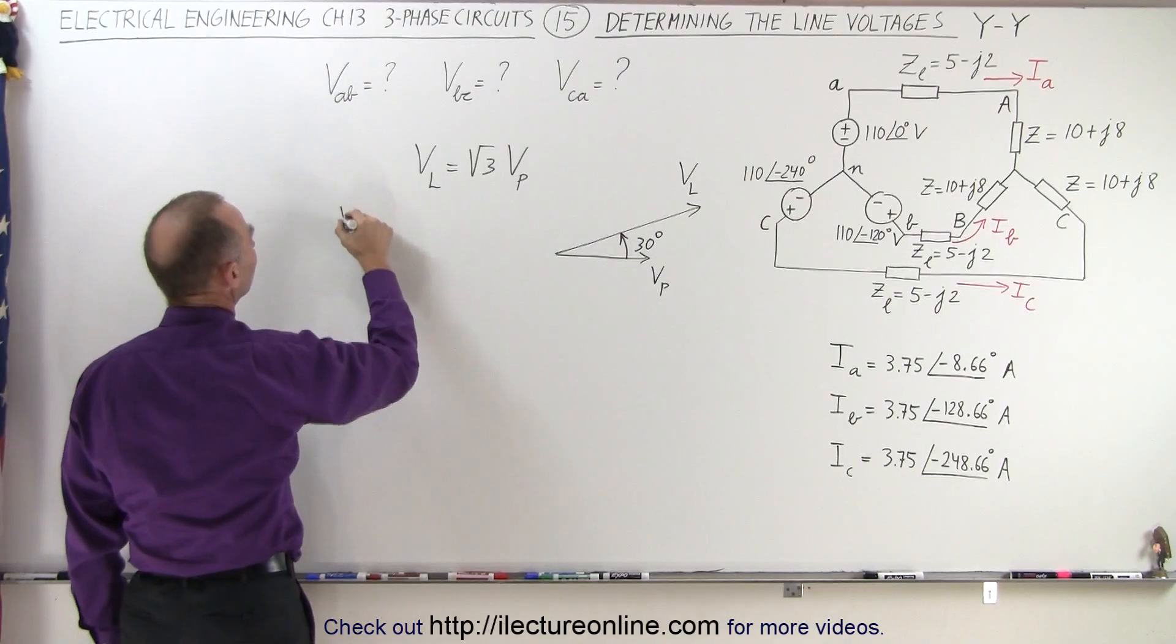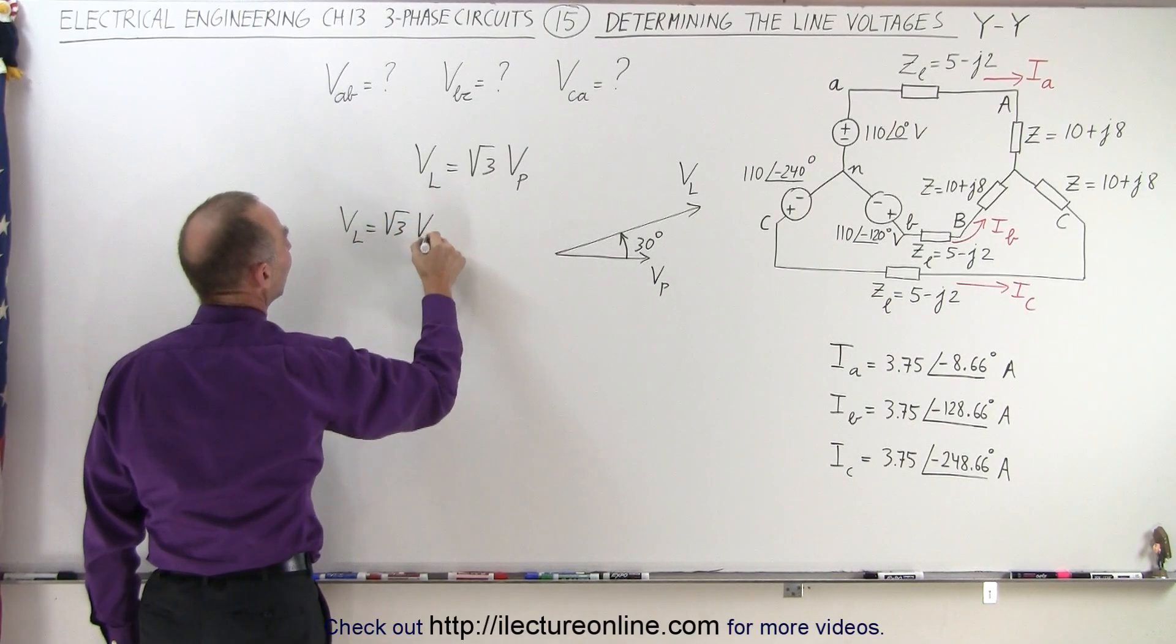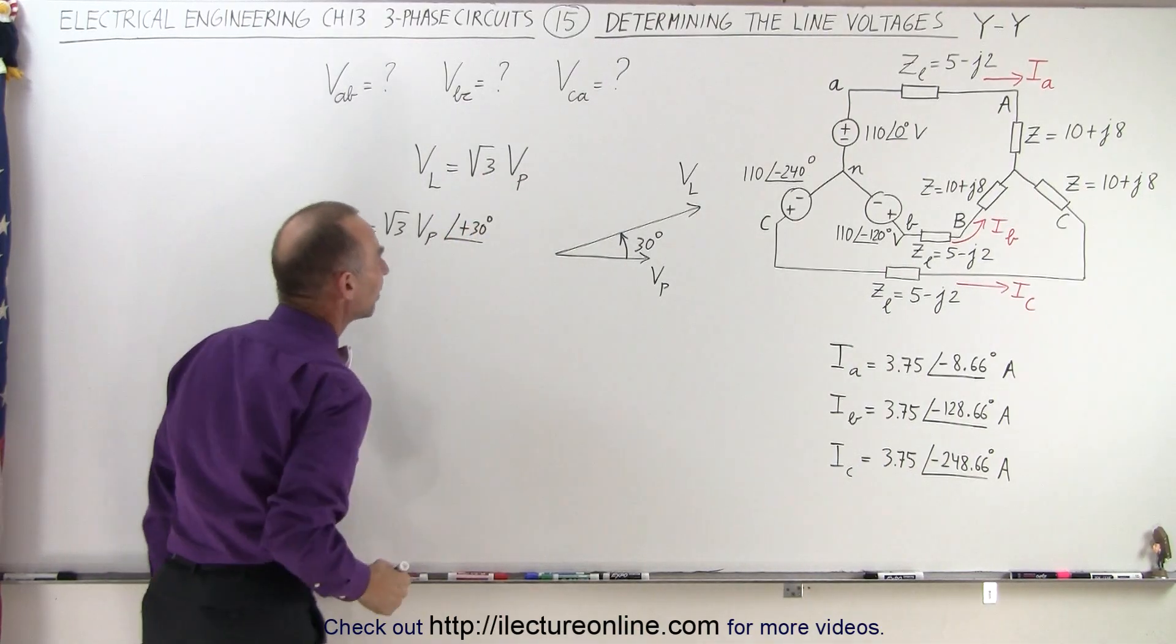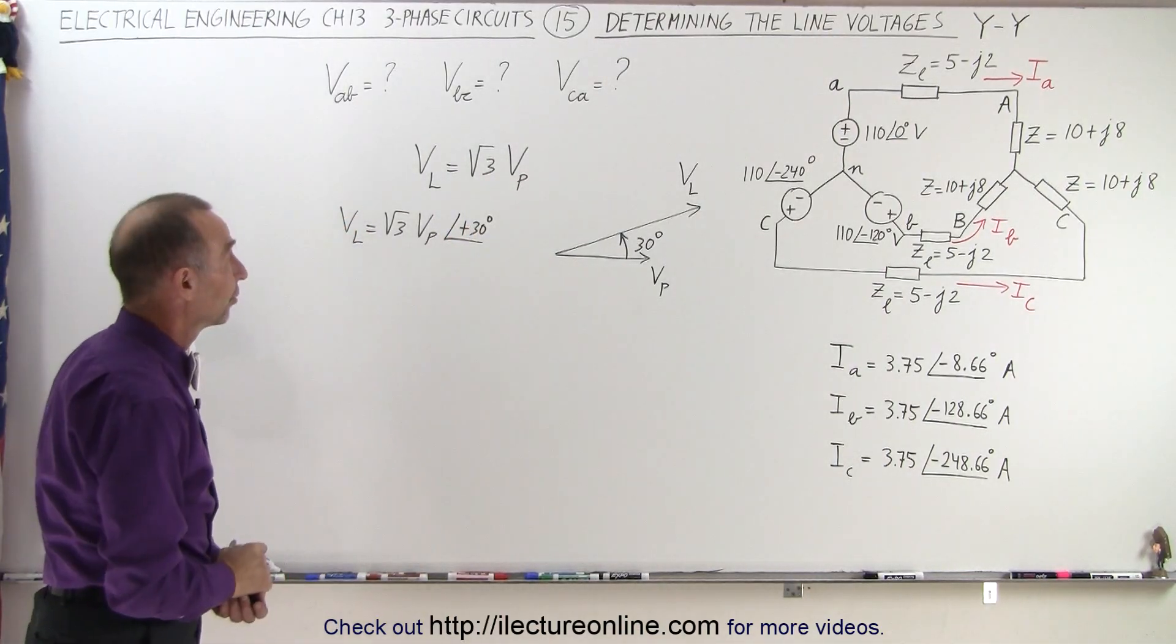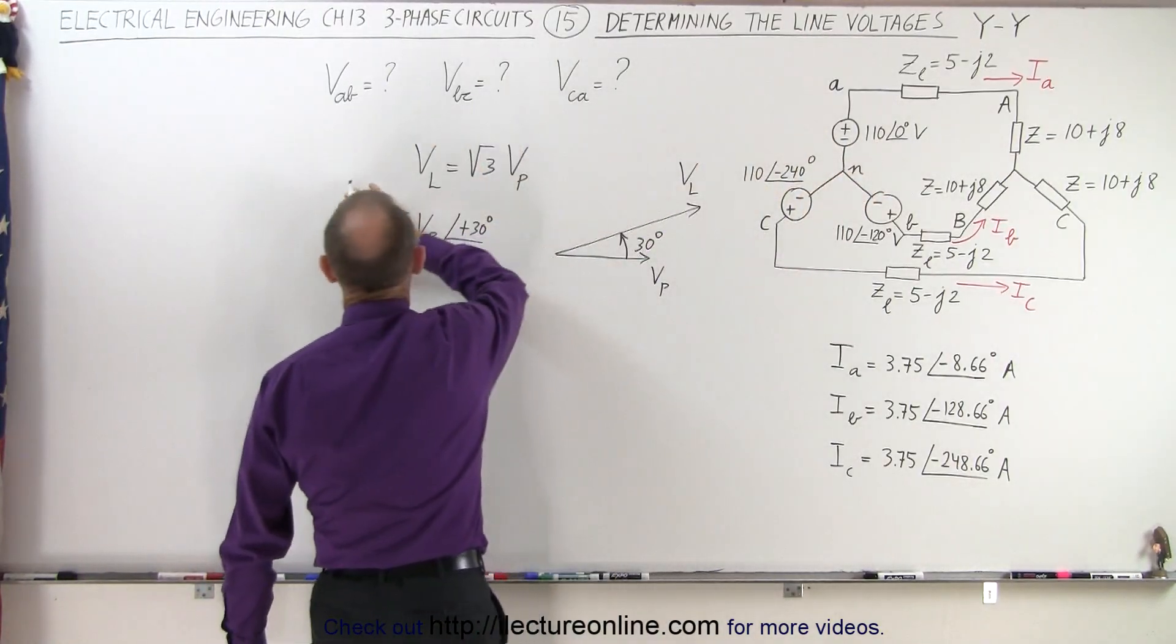So essentially what we have is that the line voltage is equal to the square root of three times the phase voltage with an angle of plus 30 degrees in the phase difference. So what we need to do now is take the phase voltage and convert it to the line voltage.